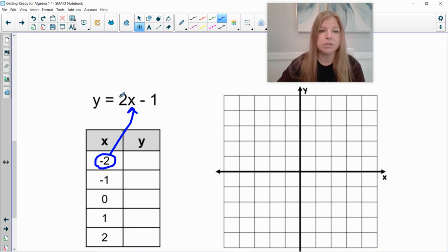This is saying to do 2 times negative 2. So first, 2 times negative 2 is negative 4. And then I have to take that answer and subtract 1. Negative 4 minus 1 is negative 5. And so that would be my first ordered pair. Then I plug in negative 1. Same exact idea. I would have to do 2 times negative 1. 2 times negative 1 is negative 2. Negative 2 minus 1 is negative 3.